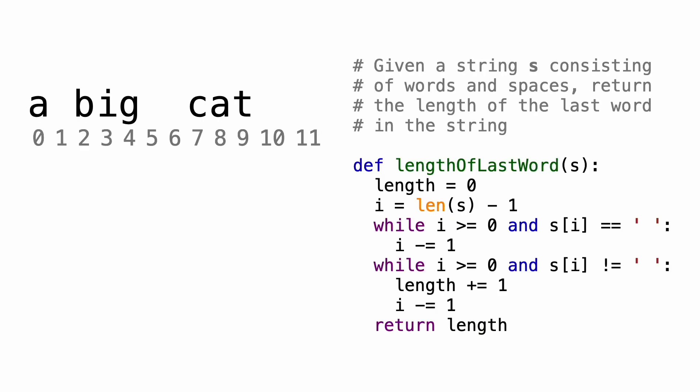So now let's look at how you can solve this without using the split method. Let's use a new string, which will be a big cat. As you can see, there is one space here, two spaces here, and two more trailing spaces. We're going to start by declaring a variable called length, which is going to hold the length of the last word in the string, and initialize it to 0.